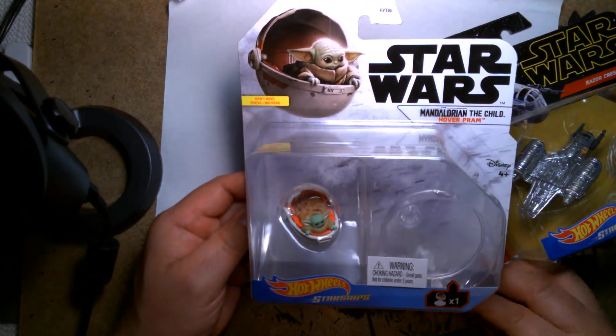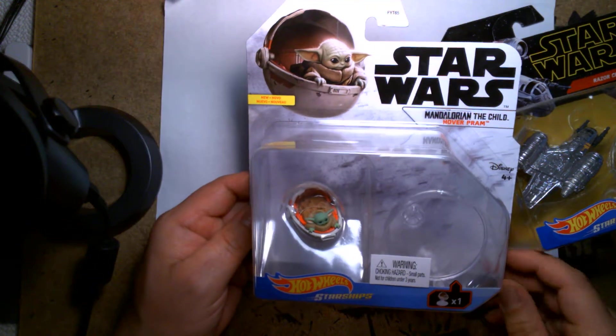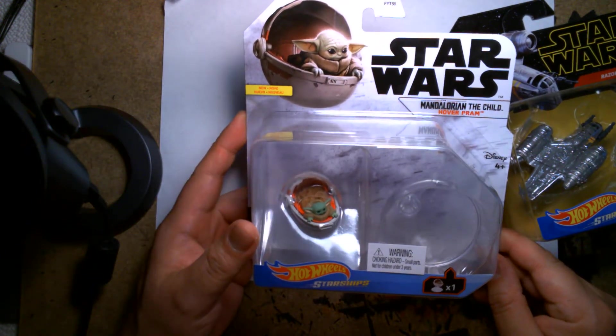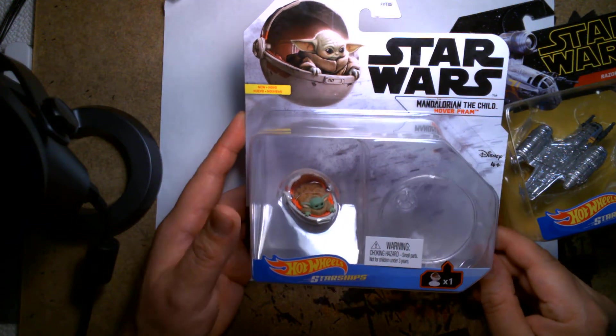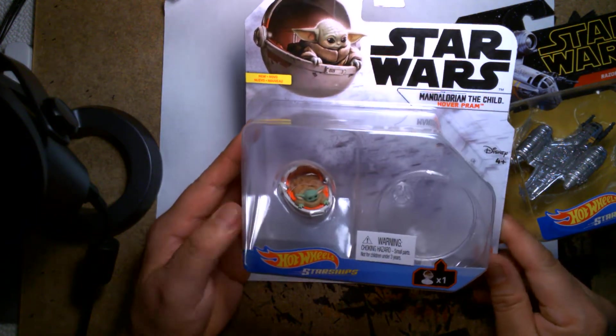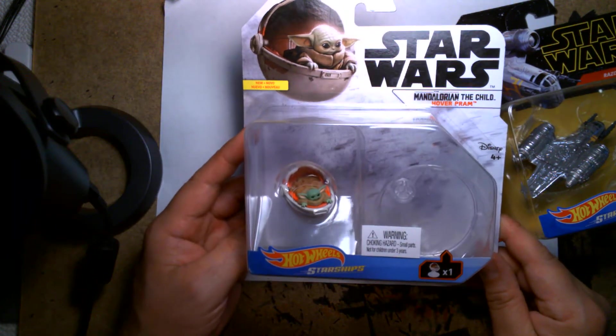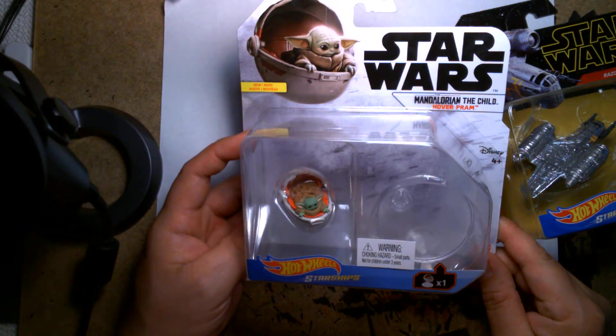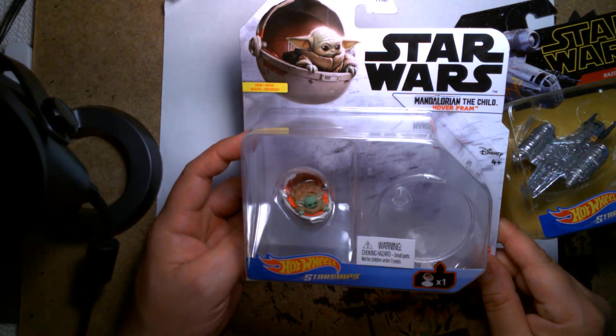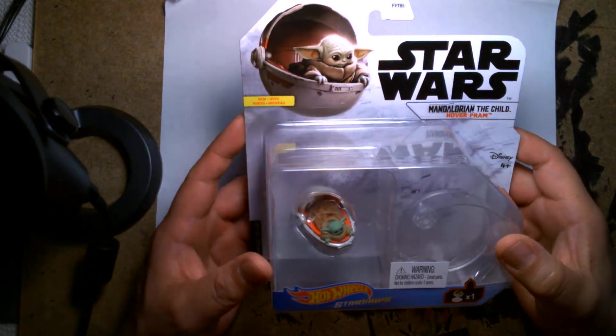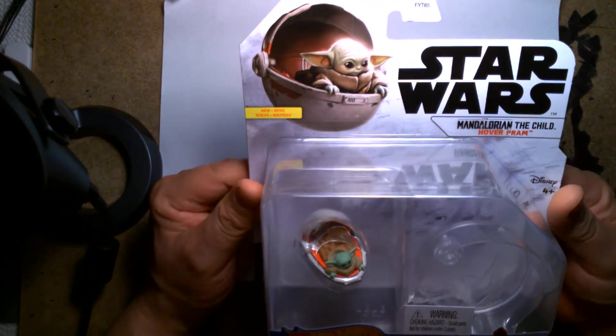Welcome back, it's me Lou, and I'm here again for another action figure unboxing and review. Today we are looking at this - it's not necessarily an action figure but close enough. We are looking at Hot Wheels Starships, the Star Wars Mandalorian the Child hover pram. You guessed it, it's Baby Yoda, aka Grogu himself, in his little hover chariot carriage thingy as we see here in the upper left corner.